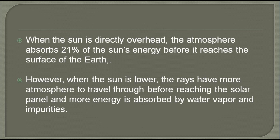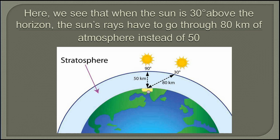In this diagram, we see that when the sun is at 30 degrees above the horizon, the sun's rays have to go through 80 kilometers of atmosphere instead of 50.